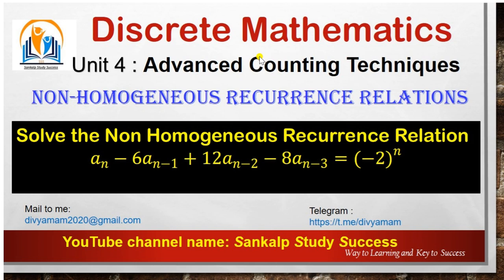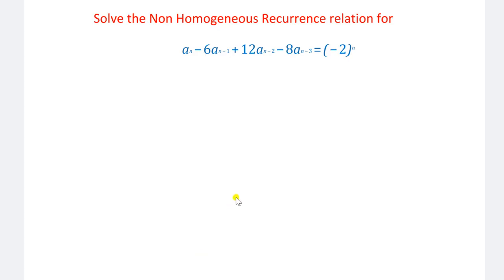So far we have discussed the non-homogeneous recurrence relation for the second order. But in this question, what is the order of the non-homogeneous recurrence relation? It is the third order. So how can we solve this particular equation? Let us see the solution here.